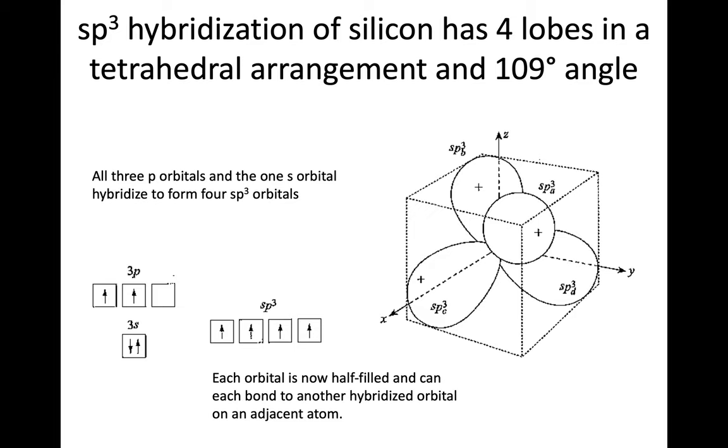All right, so to start with, let's look at what we call SP3 hybridization. This can happen in silicon and things with a similar valence structure to silicon. But this has four lobes in a tetrahedral arrangement, and the bond angle happens to be 109 degrees.